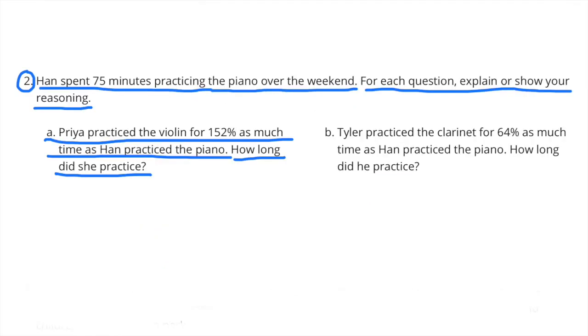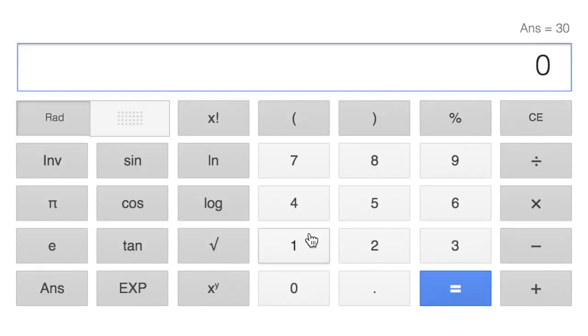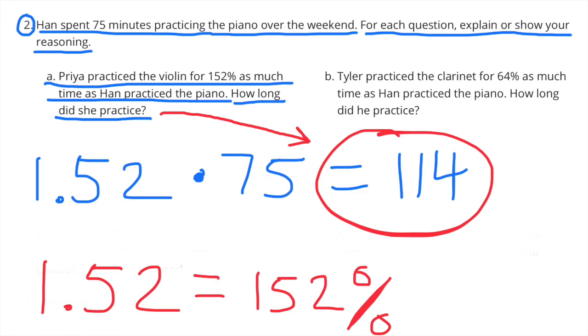Number 2. Han spent 75 minutes practicing the piano over the weekend. For each question, explain or show your reasoning. Part A. Priya practiced the violin for 152% as much time as Han practiced the piano. How long did she practice? 152% times 75 equals 114. She practiced 114 minutes.